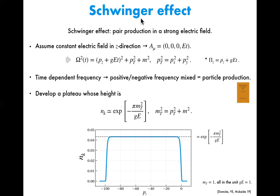In order to understand what's going on in the case with the axion, it is better to first understand the standard case without the axion. The Schwinger effect is the particle pair production process in the presence of a really strong electric field — an electron-positron pair just pops out from the vacuum. I will always assume a constant electric field in the Z direction. Taking the temporal gauge, you can compute the dispersion relation of the fermion in the presence of this gauge field.